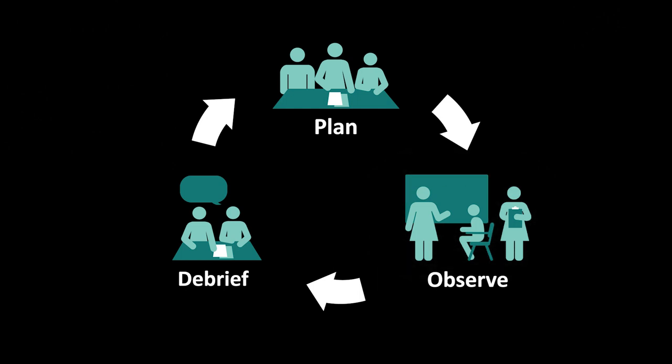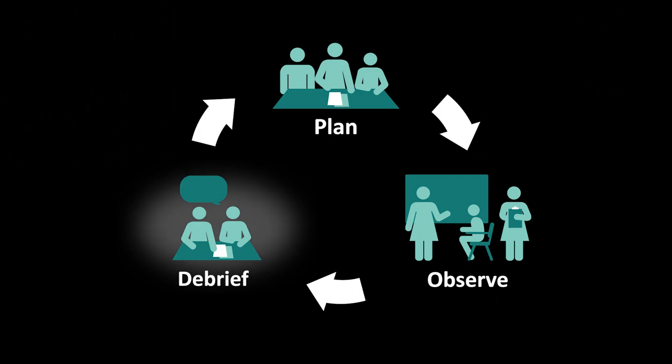Then we come back after watching the lesson and we do glows — like what went well, what were the students able to do — and then we do grows. We come back based off the glows and grows and do another lesson that builds off of it, pretty much repeating the same process.